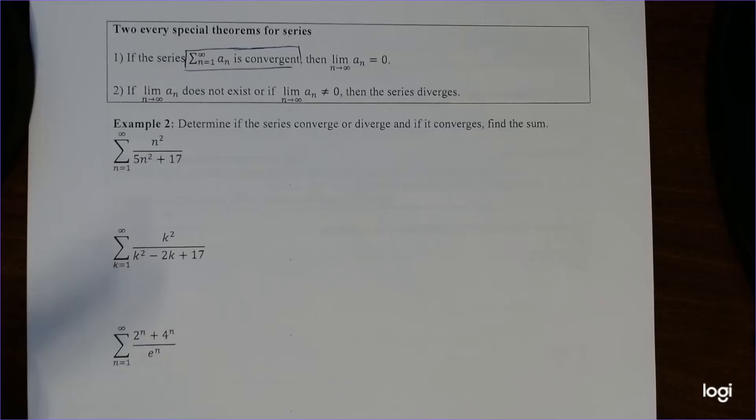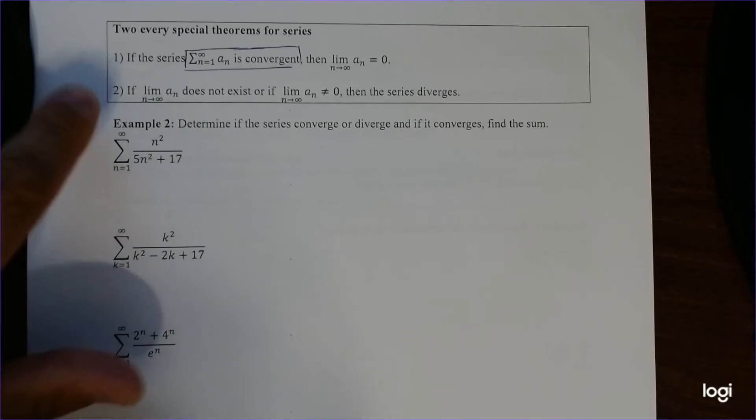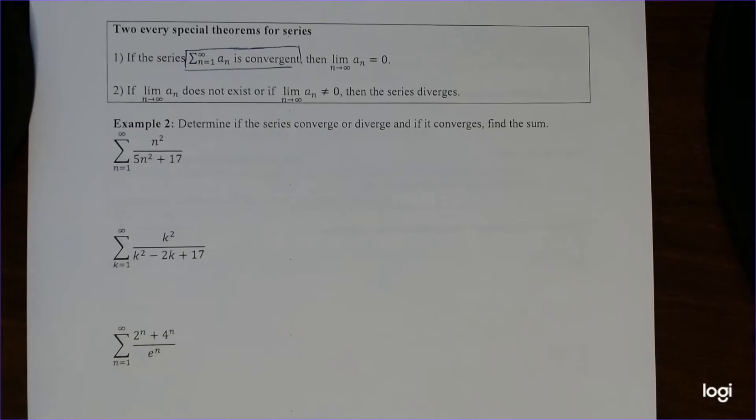Okay, and then number two says if the limit of A sub n does not exist or the limit of A sub n does not equal 0, then the series diverges. So this is actually a very important theorem. It's called a divergence test. Basically saying, if you take the limit and it doesn't exist or it doesn't equal 0,